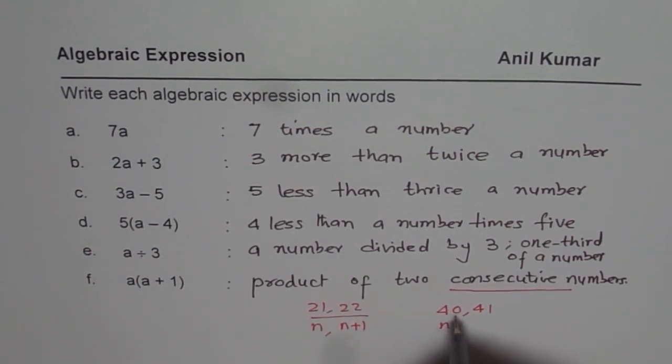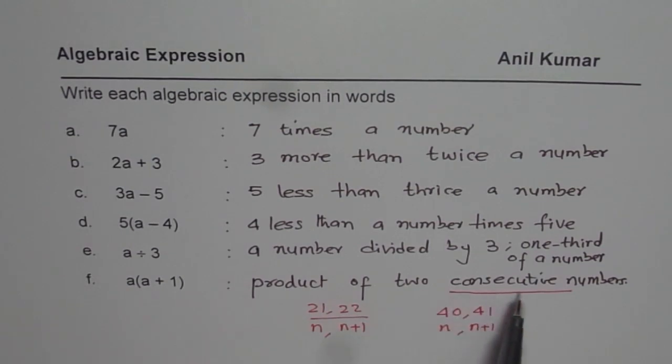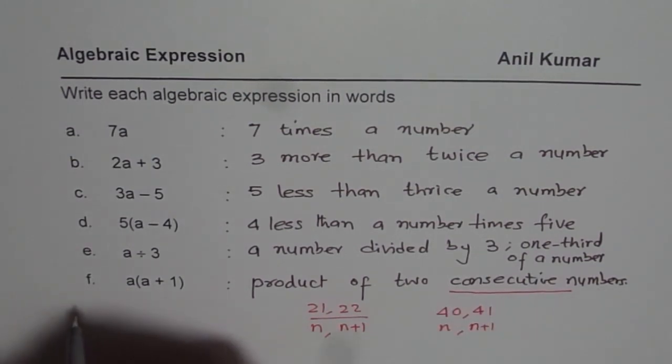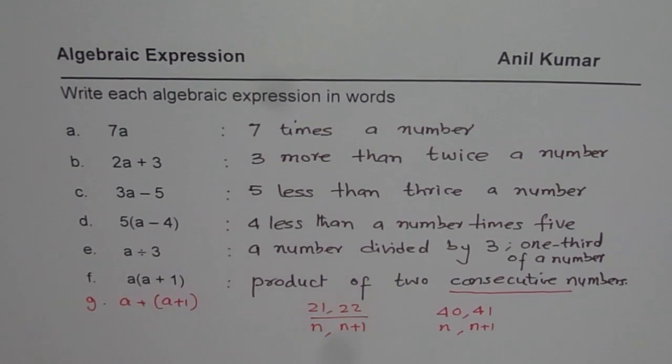So if I say n is 40, then n plus 1 will give me the next consecutive number which is 41. So that is how we could see it. So it is important to understand and appreciate that a times a plus 1 could be written as product of two consecutive numbers. So now this one is for you. If I write a plus a plus 1, how should I write this expression in words? I hope that is going to help you. Thank you and all the best.